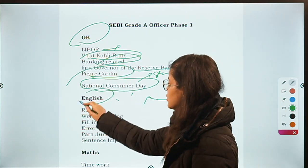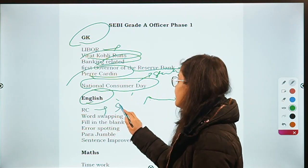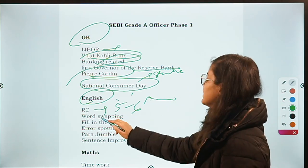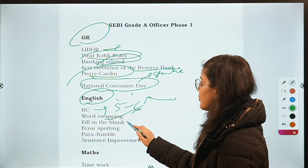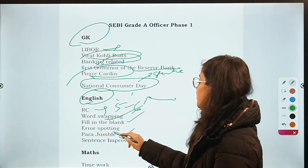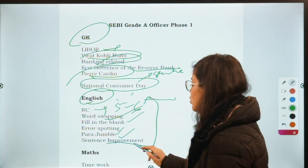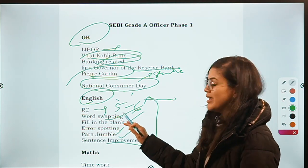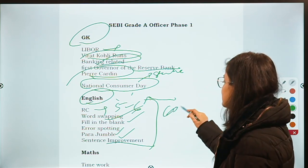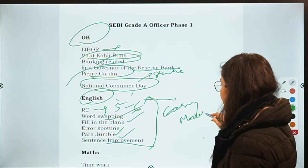Moving on to English. In English, there was an RC from which 5 to 6 questions were asked. Then Word Swapping, Fill in the Blanks, Error Spotting, Para Jumbles and Sentence Improvement. The questions were of easy to moderate level — they were not too tough.